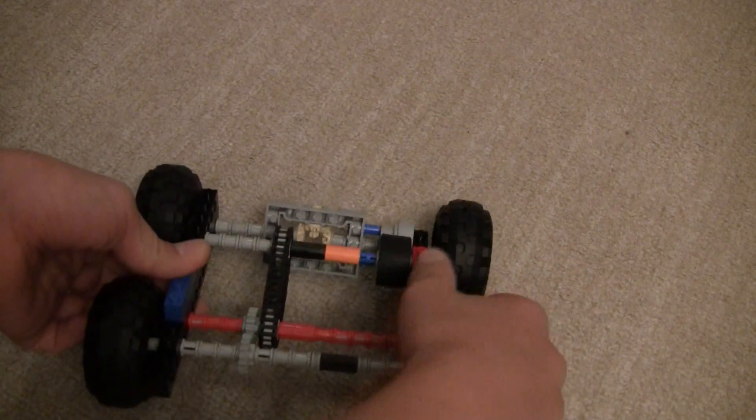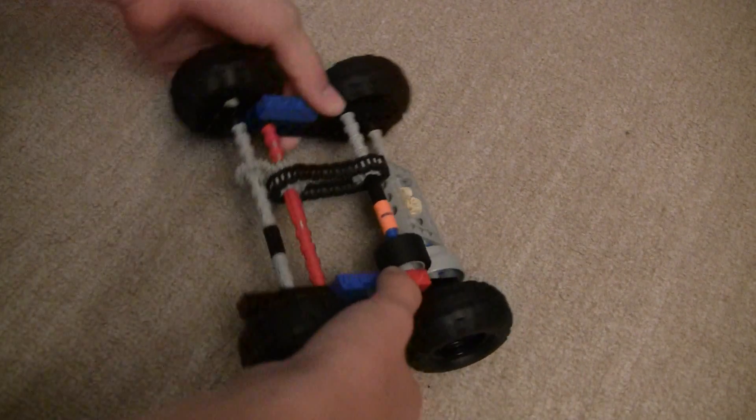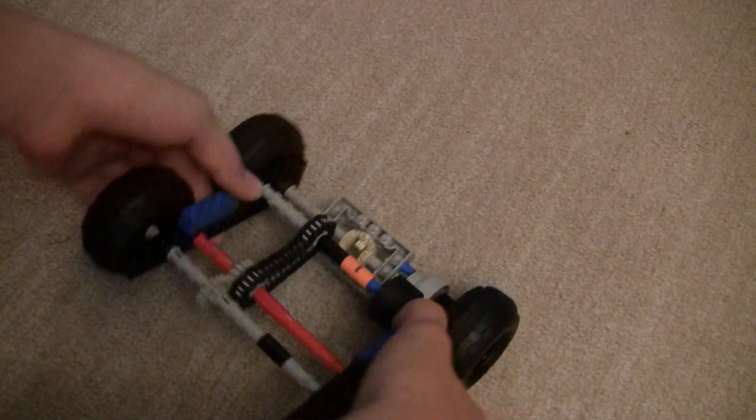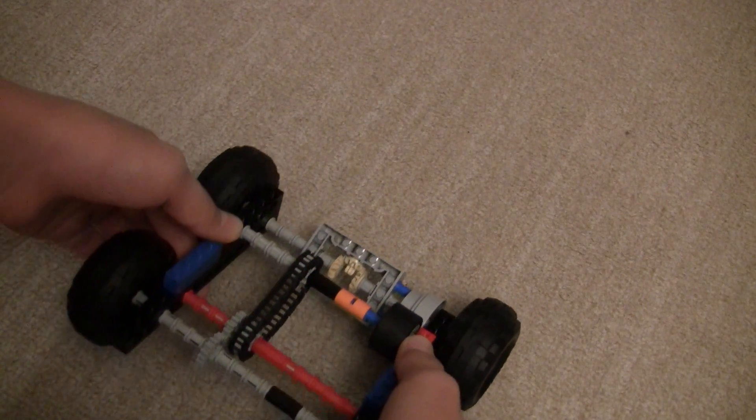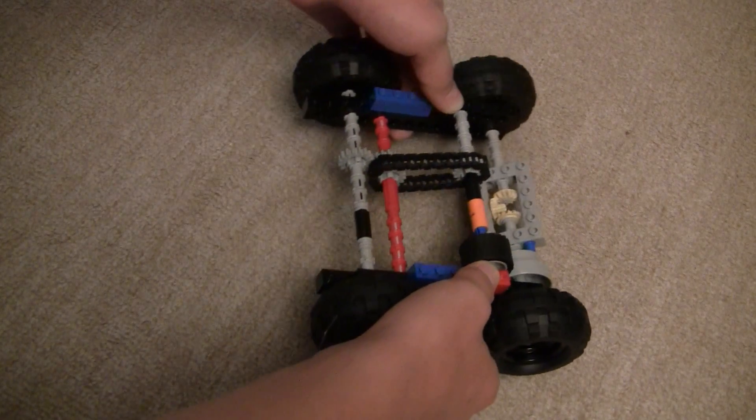When I flip it around to the side that does have a differential, it spins quite easily. That's because one of the wheels can stop while the other wheel gets going faster, or one wheel can go slower while the other wheel goes slightly faster.